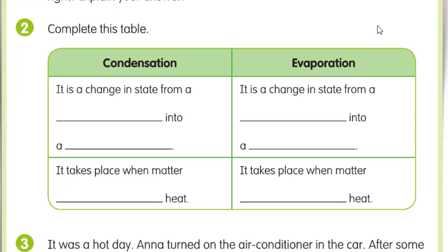Number 2: Complete the table showing the difference between condensation and evaporation. It is a change in state from gas to liquid (for condensation) or liquid to gas (for evaporation). It takes place when matter loses heat (condensation) or gains heat (evaporation).